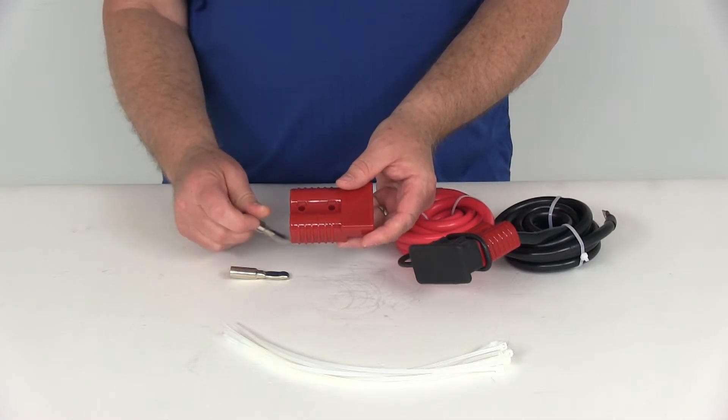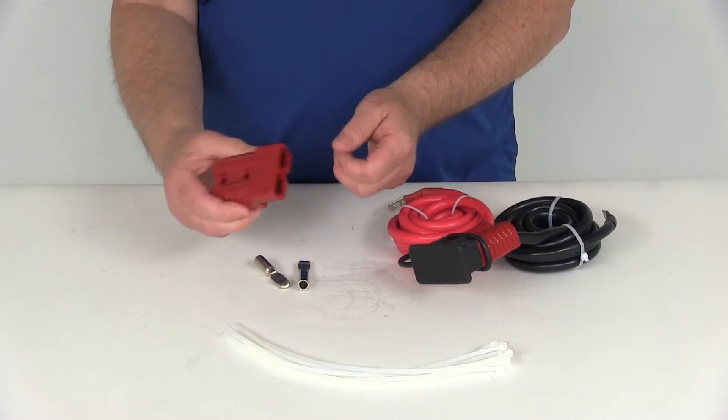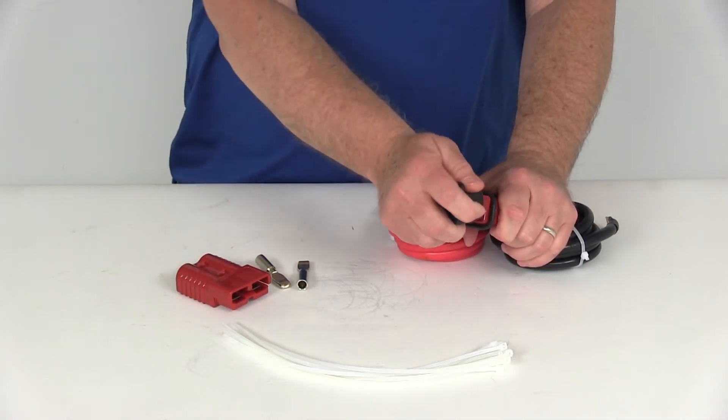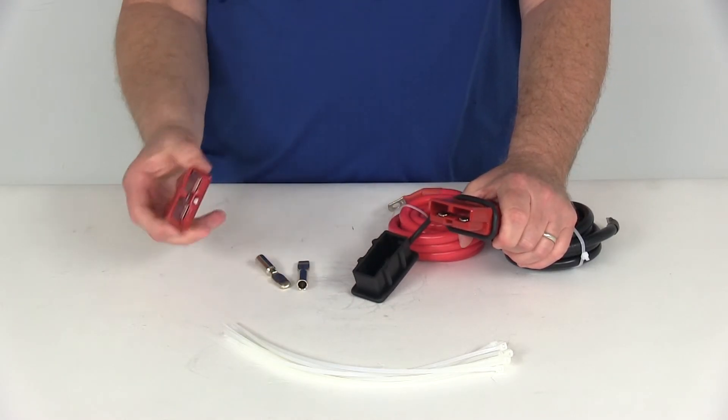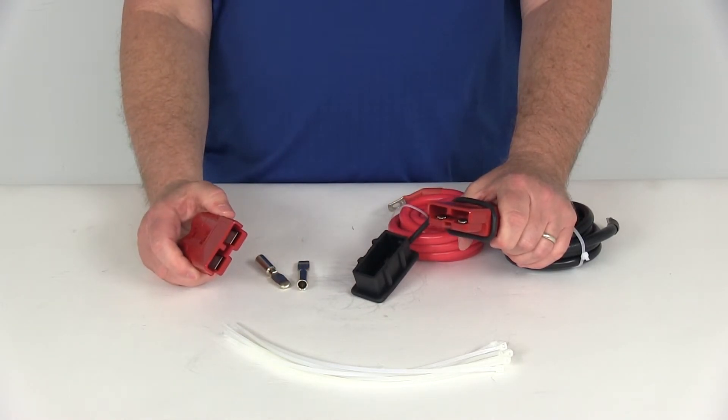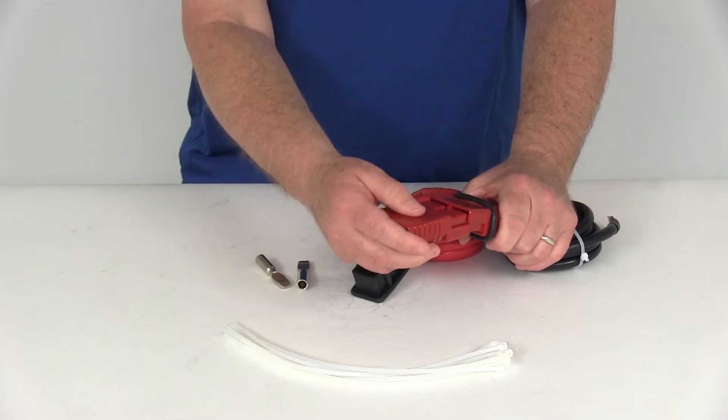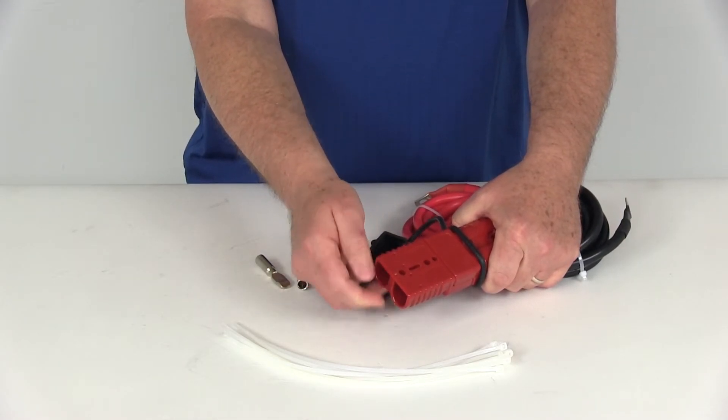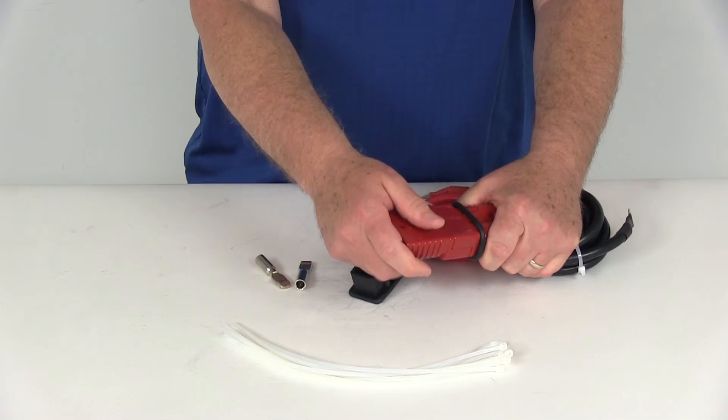Make sure you do the positive and negative correctly. Once you have those all connected, then all you'll have to do is with this installed on the front of your vehicle, when you go to put your winch on the front of the vehicle, all you have to do is just slide those two together and they snap into place, fully weatherproof over the terminals.